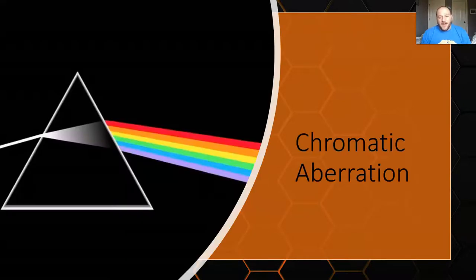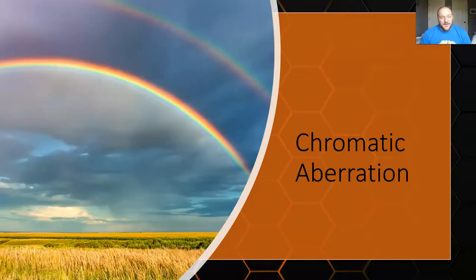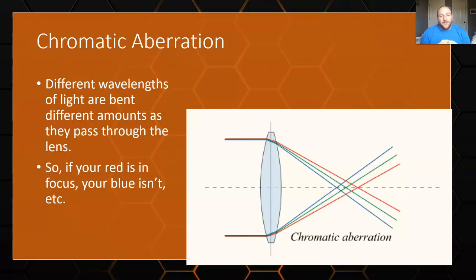The last problem with refractors is chromatic aberration. When light shines through a medium, different wavelengths refract different amounts — that's why a prism produces a rainbow, with red bending less than purple. This is a problem for scopes because different wavelengths have different focal lengths. If you get red in focus, blue is not in focus, and vice versa. You can apply coatings over lenses to help, but in the long run chromatic aberration is a persistent problem for refractors.